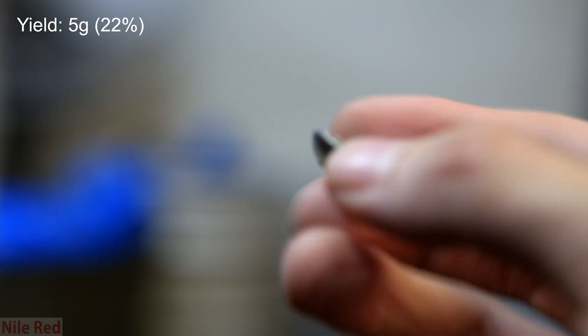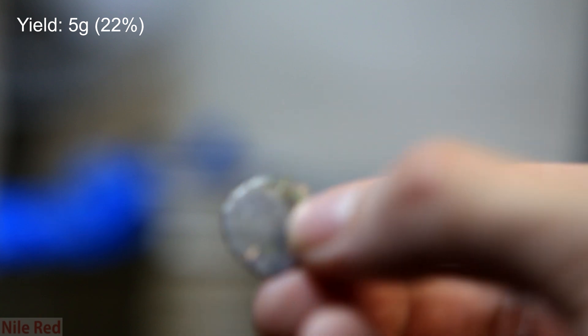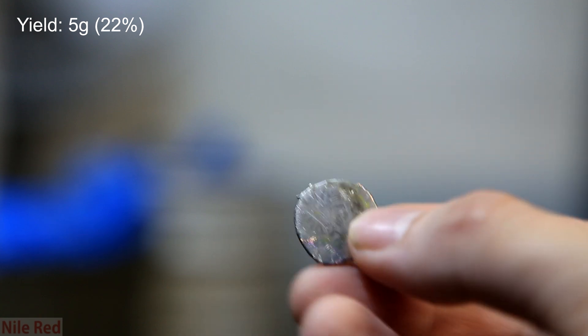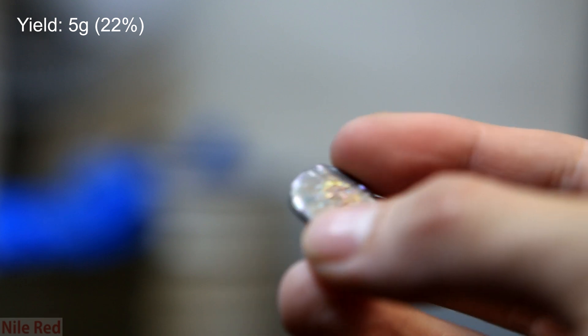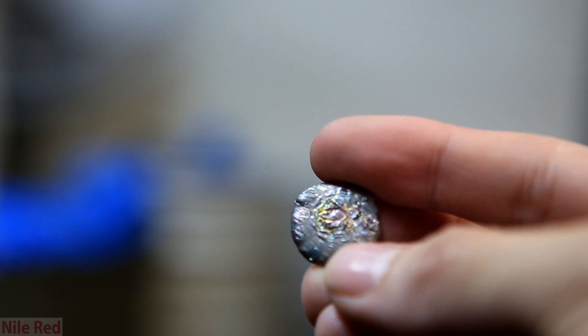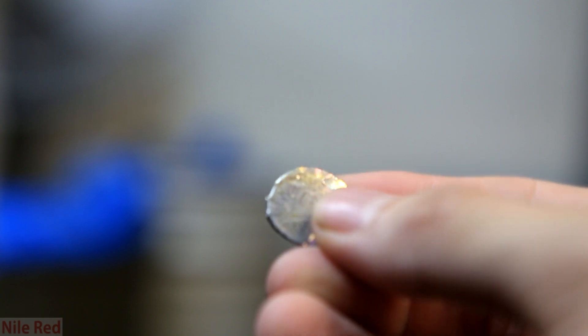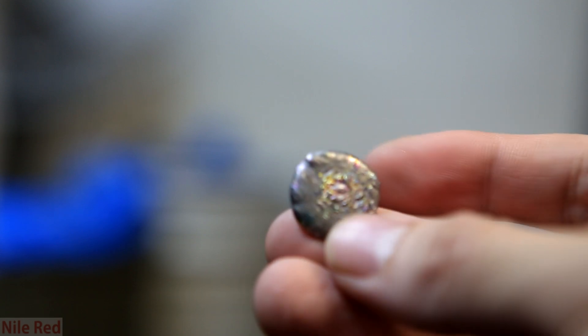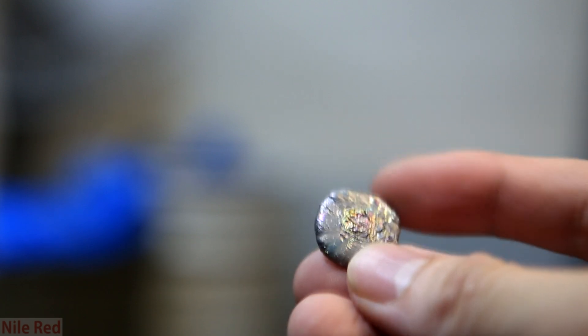After cooling, this is what the final bismuth looked like. This was about 5 grams of bismuth metal, which represents an extremely low yield of bismuth. The yield was a very bad 22%, but even if it were 100%, it still wouldn't be a great way to get bismuth metal.